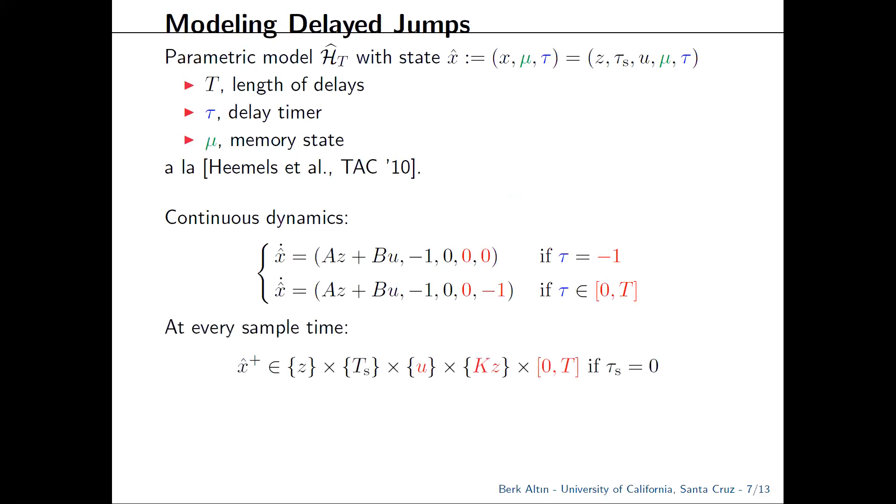For the discrete dynamics, we make some minor changes. Before, we updated u at sample times according to the control law. Now, we keep u constant and instead record the new control input kz in our memory state mu, and we also update the delay timer to a random value between zero and t. Once the delay expires, we take this recorded value kz from the memory state mu and finally update the zero order hold input u.